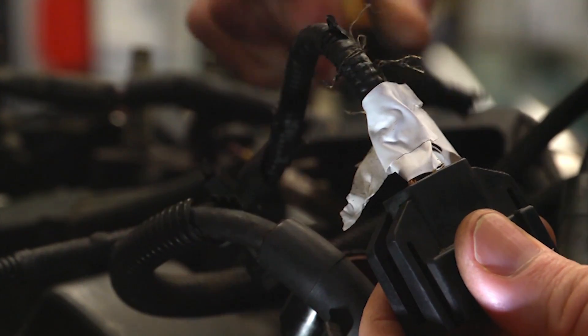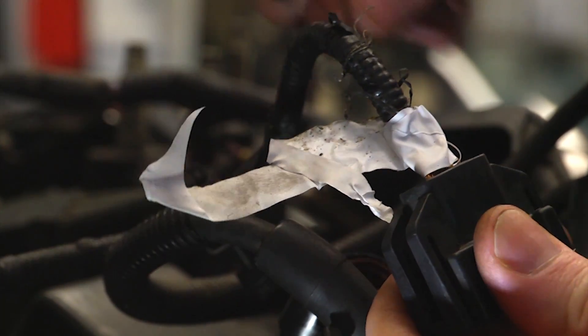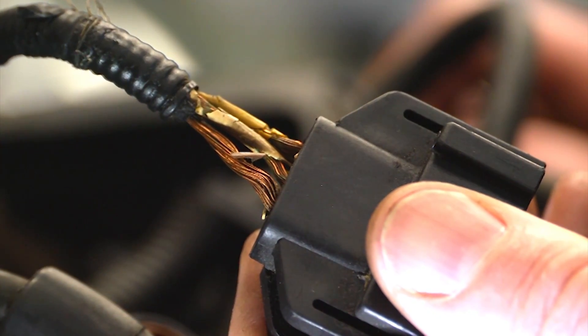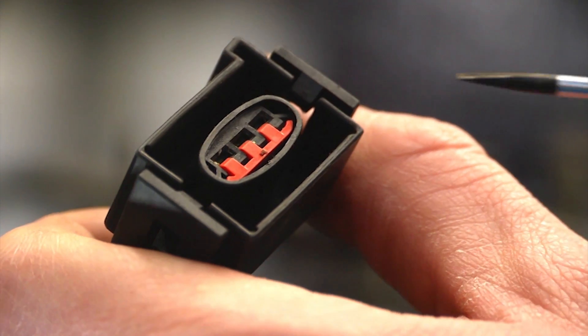This is a typical example of engine bay heat damage to the wiring insulation. Wrapping with a piece of insulation tape is not a cure.